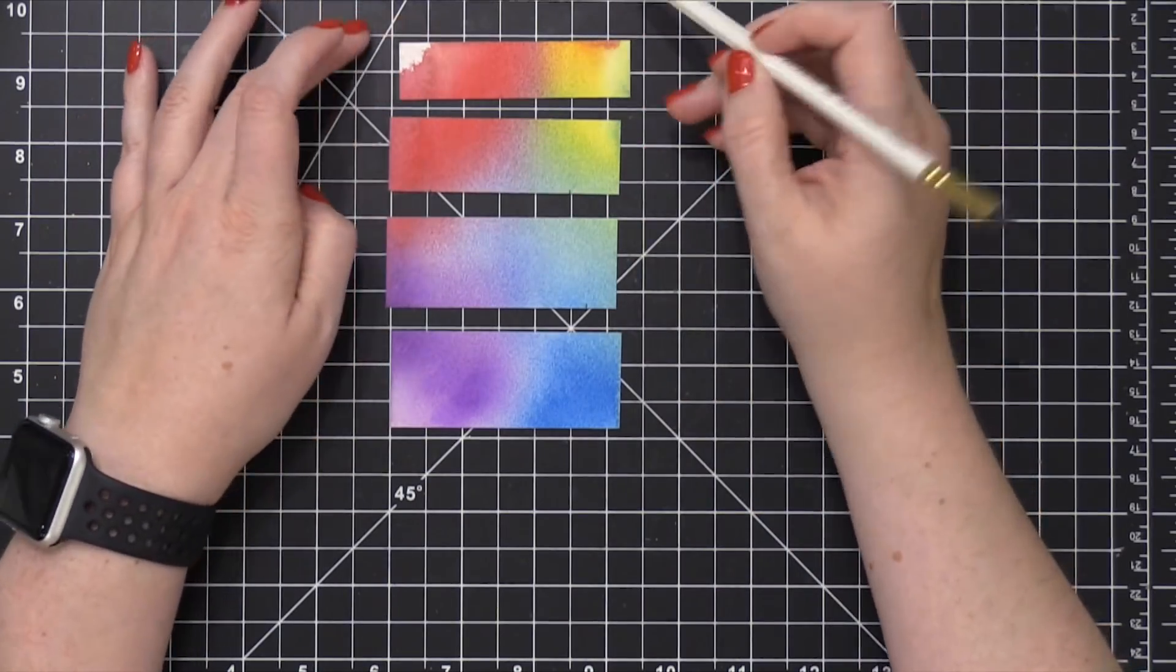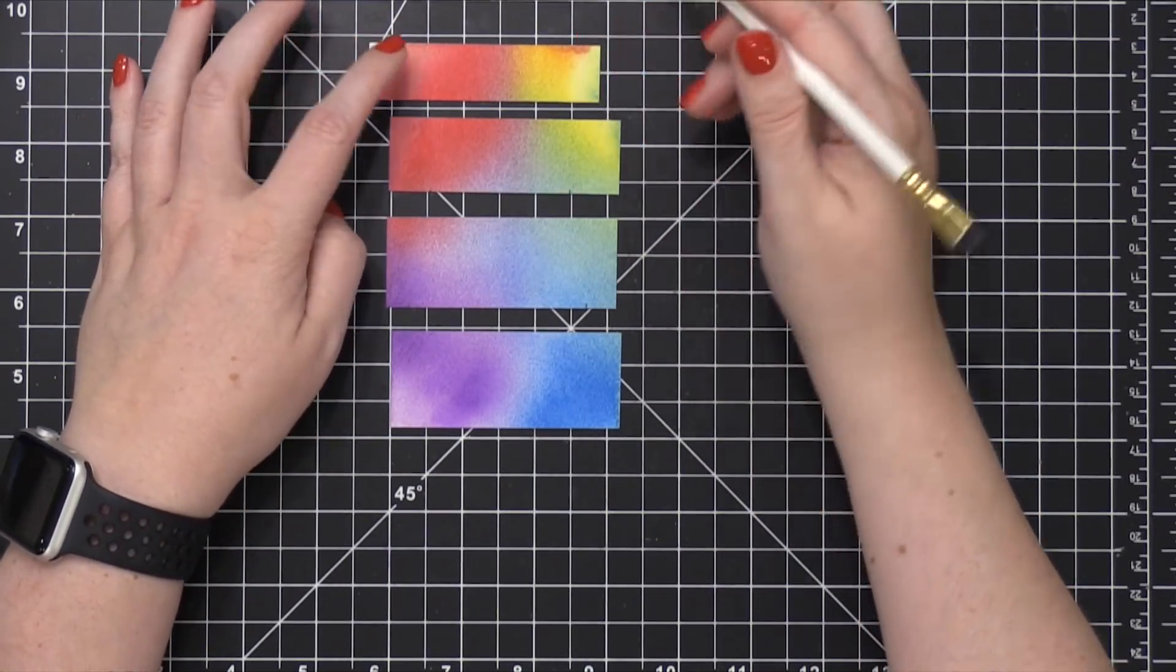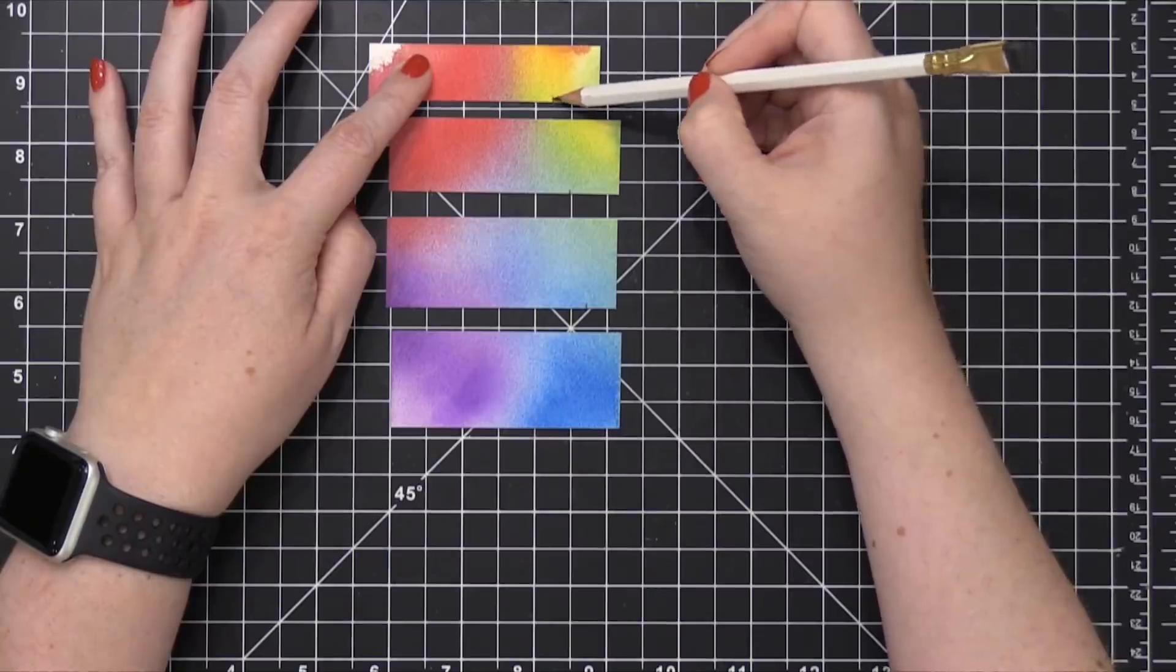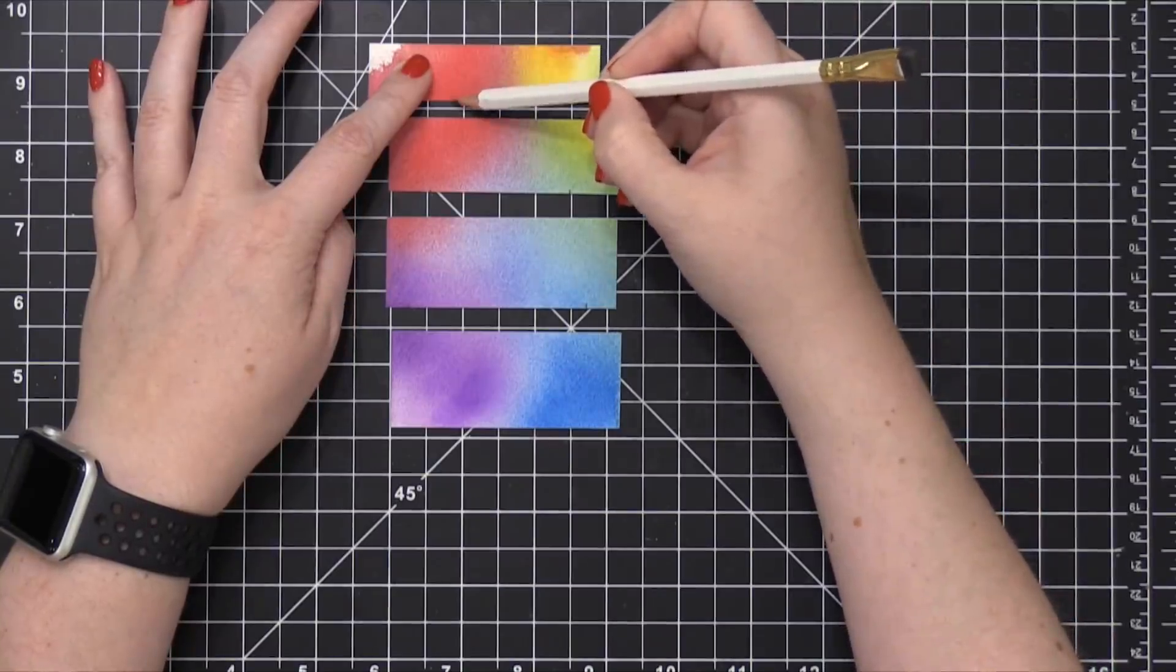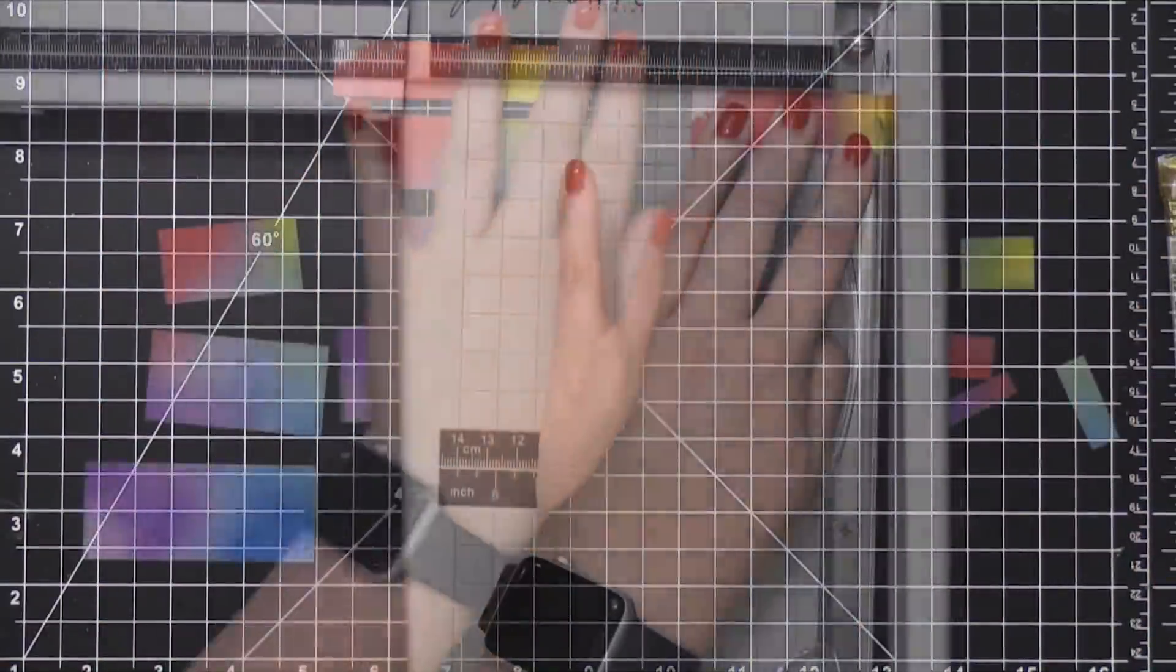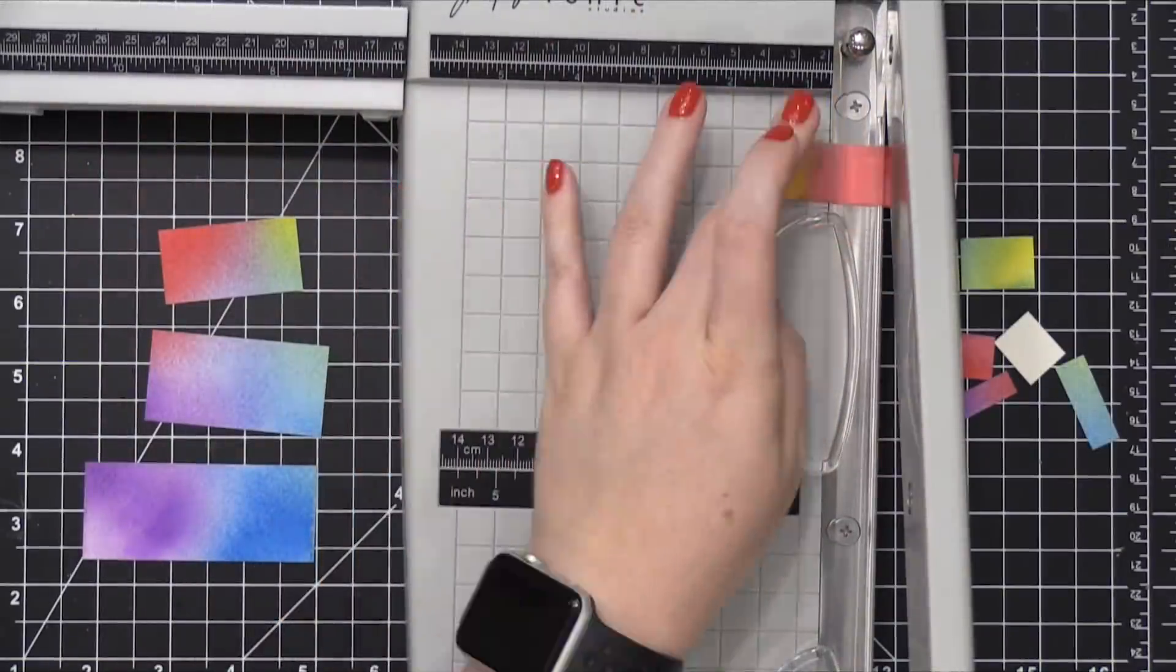I'm using a pencil to make those marks on these watercolor strips. And then I'm going to take my paper trimmer and I'm going to trim these down. So I want to make sure that they're just the right size for what I have in mind.